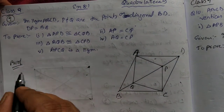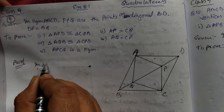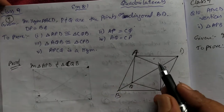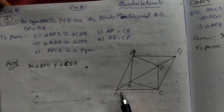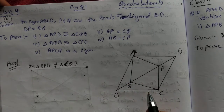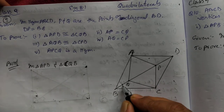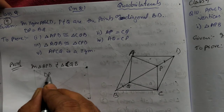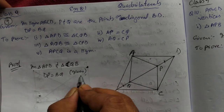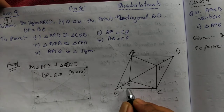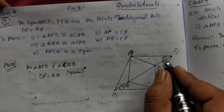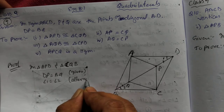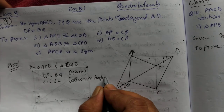Let us prove the first part: in triangle APD and triangle CQB, we will try to prove these two triangles congruent. First, DP equal to BQ — it is already given. Second point: angle 1 equal to angle 2. This is because they are alternate angles.